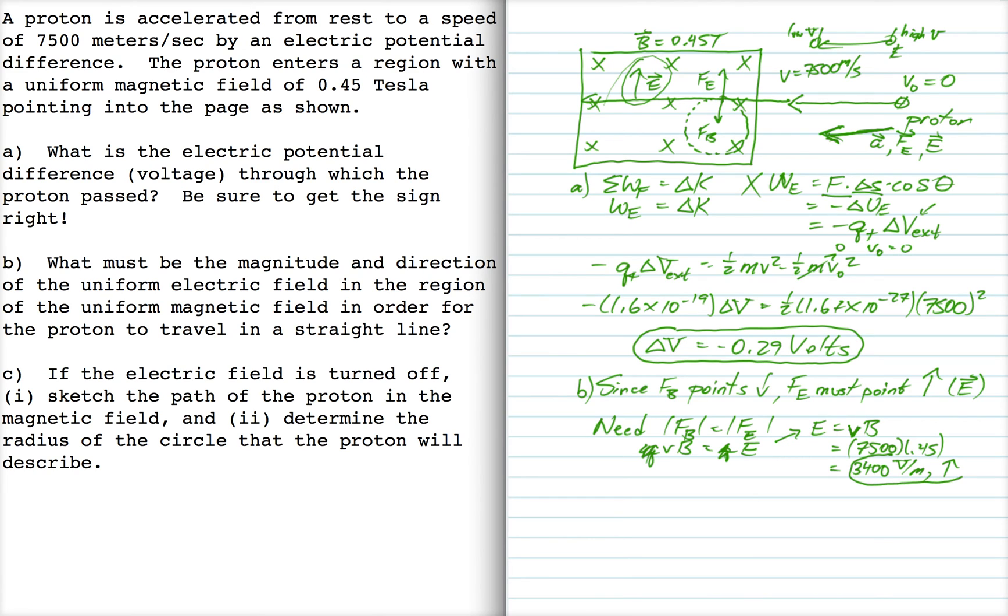So there's our answer for part B. Okay, for part C, if the electric field is turned off, sketch the path of the proton through the magnetic field. Oh, we already did that. All right. So it's going on a little circle like this, a little counterclockwise circle. We have to determine the radius of that circle.